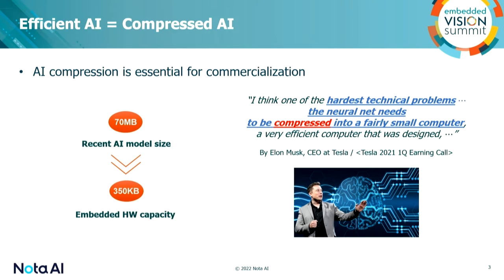I believe all of you agree that AI compression and efficient AI is essential and necessary for the commercialization and productizing of AI models. The recent AI model size is really huge — it takes from a few hundred megabytes to a few hundred gigabytes, while the capacity of embedded hardware is really small. So there is a big gap between the hardware capacity and the model size. The solution is AI model compression.